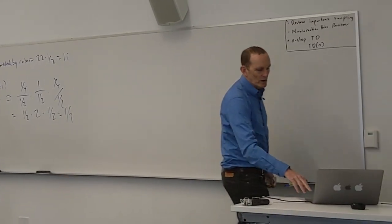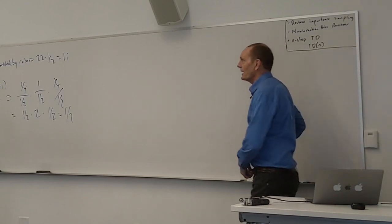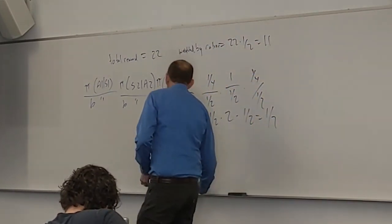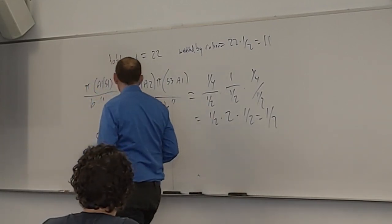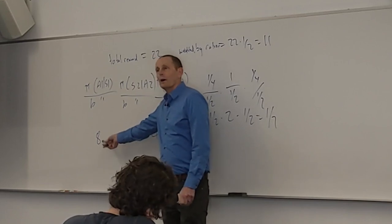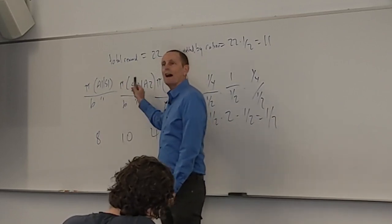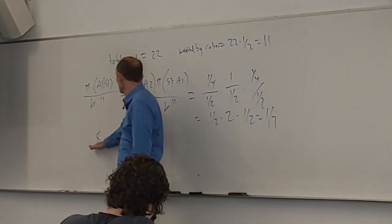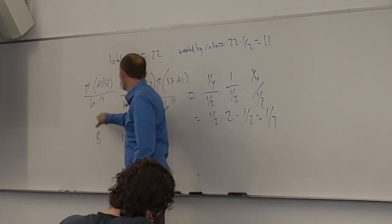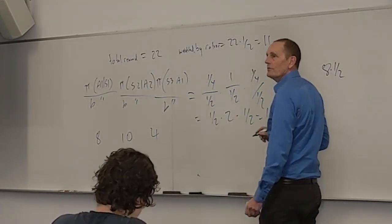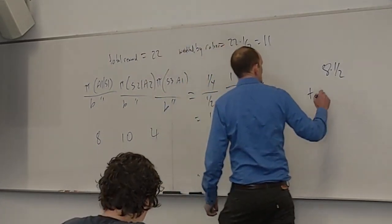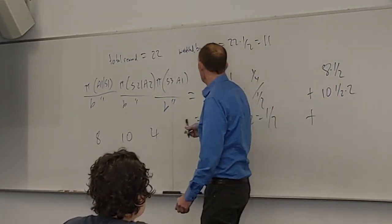The next one was on per-decision importance sampling, where we do get into particular weights. The rewards are 8, 10, and 4. For per-decision importance sampling, we ask: for these particular rewards, how many of them don't depend on some of the factors in the ratio? The first reward of 8 depends on A1 given S1 but not the later ratios, so we take 8 times 1/2, plus 10 times 1/2 times 2 (it depends on those two ratios but not the last), and then the last reward of 4 depends on all three.